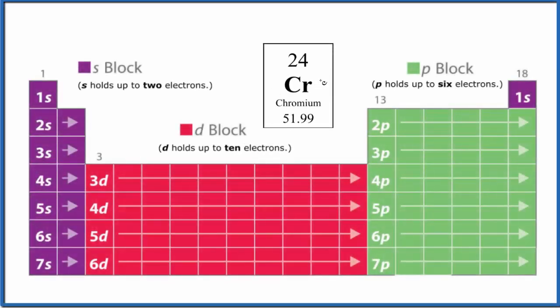In this video we'll write the atomic orbital diagram for chromium. The first thing we need to do is write the electron configuration for chromium. Chromium, atomic number 24, means it has 24 protons, but since chromium is neutral like all elements on the periodic table, it also has 24 electrons.